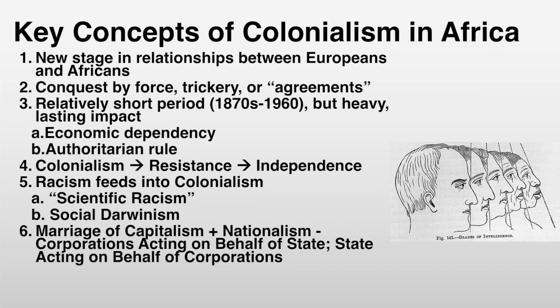The colonization and imperialism was a pretty short period, mostly from the 1870s into the 1960s, but it had a very heavy lasting impact in both creating economic dependency and setting authoritarian rule into place. There was always resistance to colonization — there's kind of a cycle: colonialism, resistance, to independence. Each one of these nations got their independence eventually.